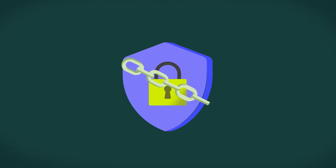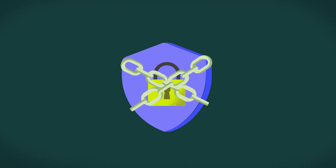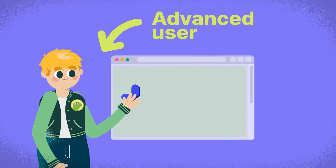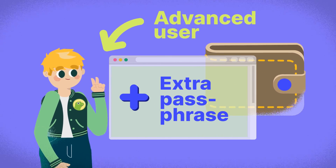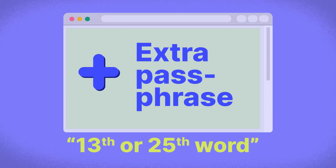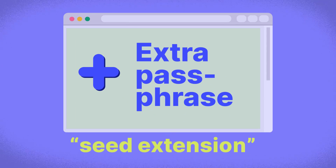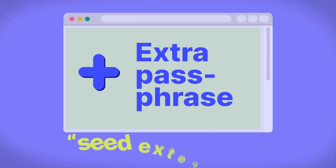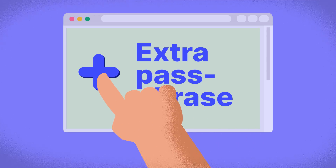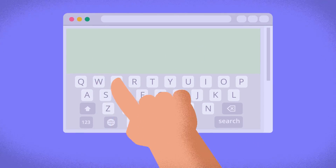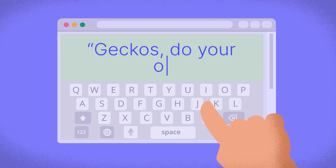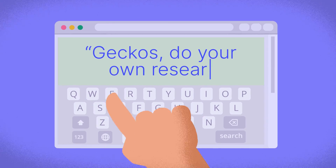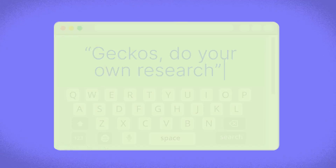For optional added security, the BIP39 standard also includes an option for advanced users to add an extra passphrase to secure a wallet, sometimes referred to as a 13th or 25th word or a seed extension. This additional passphrase is not restricted to the 2048 words of the BIP39 word list and is essentially a customizable password up to about 50 characters long.